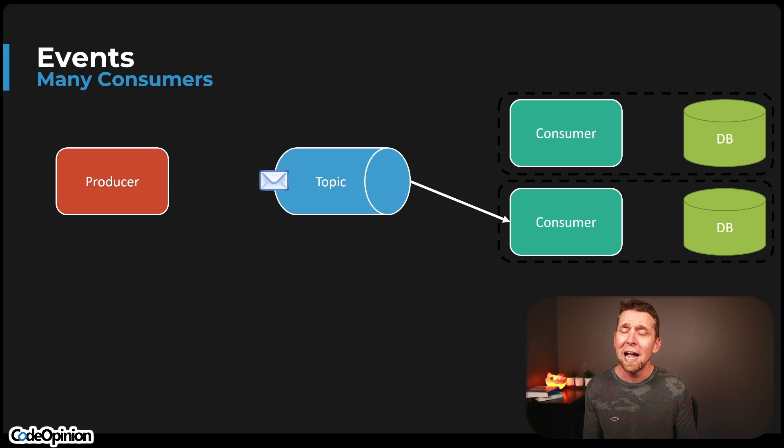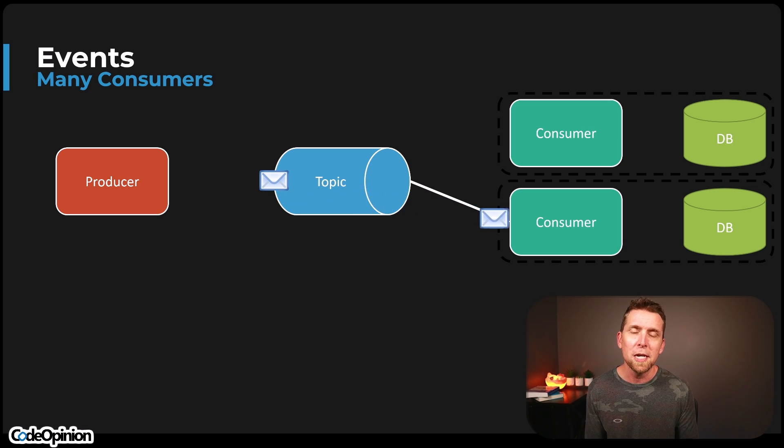With events, a producer publishes to a topic and you could have zero consumers or many different consumers subscribing to and processing that event. So can you use Kafka as a queue? Sure, I guess, if you want to force the issue with topics and publish-subscribe — but that makes no sense to me, just like using a hammer to pound in a screw.